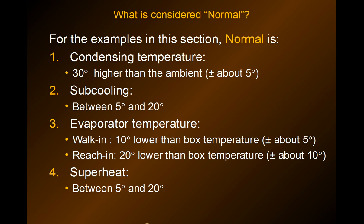For the troubleshooting examples in these videos, normal means the condensing temperature is about 30 degrees higher than the ambient, plus or minus 5 degrees — that's also on the cheat sheet. Normal subcooling is between 5 and 20 degrees. Evaporator temperatures for a walk-in are 10 degrees lower than the box temperature, and for reach-ins, 20 degrees lower than the box temperature, with a pretty wide margin plus or minus. Normal superheat is between 5 and 20 degrees.